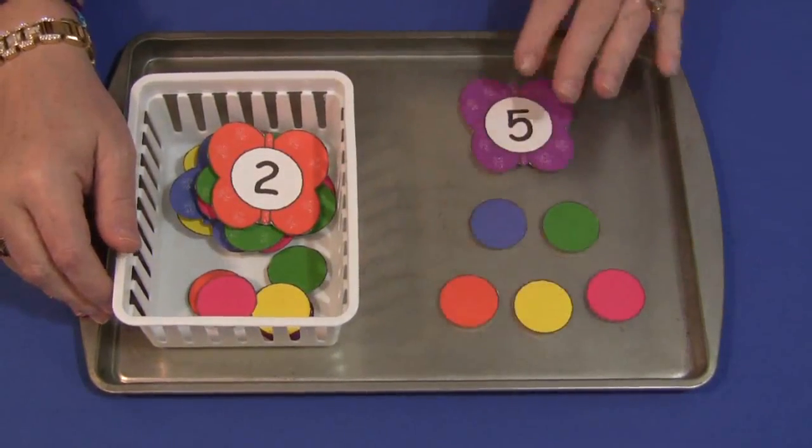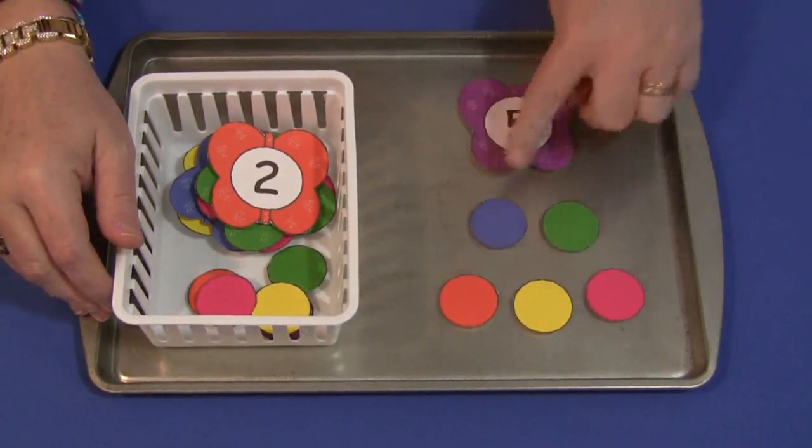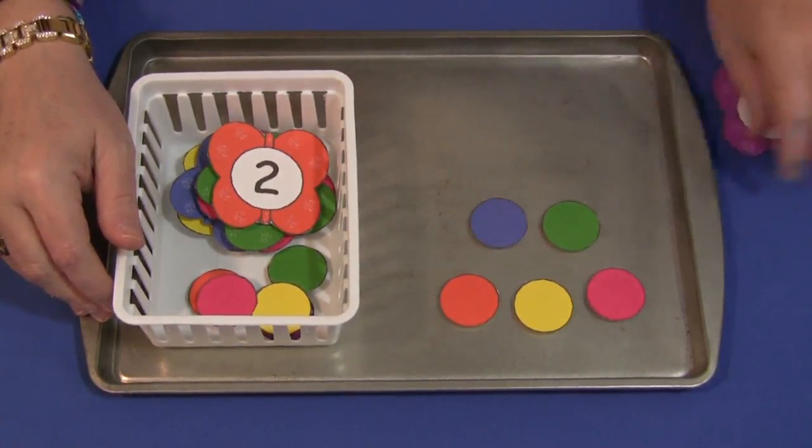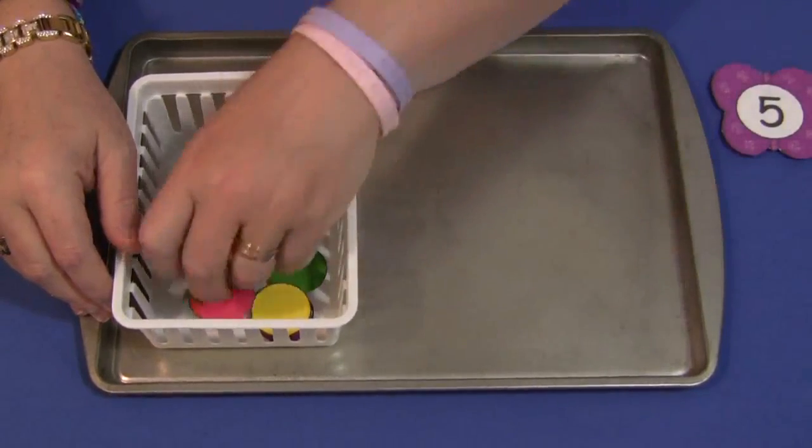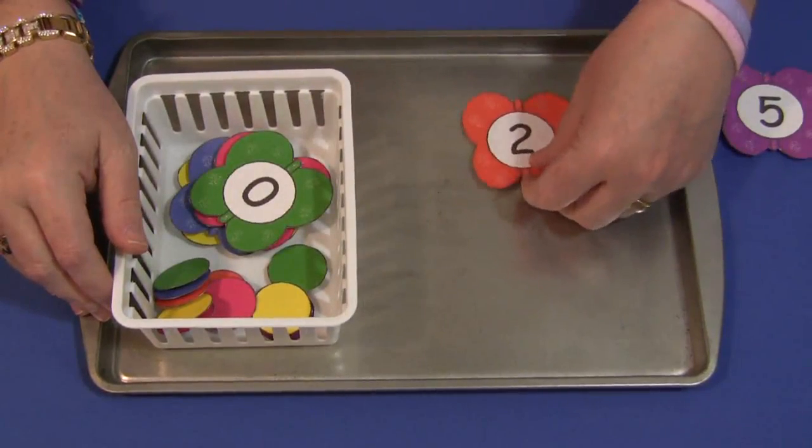So we have five on the butterfly and we put five circles out, and then they would just set those aside and then they could pick out a new butterfly.